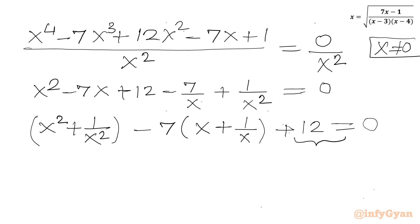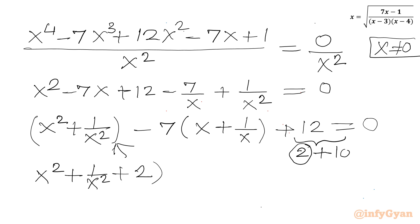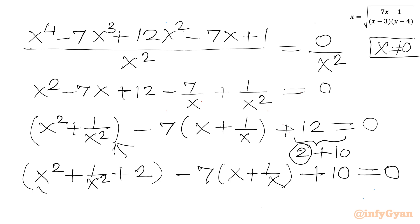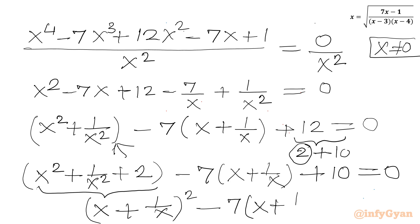Now I will split 12 as 2 plus 10, and write the 2 inside the bracket with x squared plus 1 over x squared. So the equation becomes (x squared plus 1 over x squared plus 2) minus 7(x plus 1 over x) plus 10 equals 0. This bracket is a perfect square: (x plus 1 over x) squared minus 7(x plus 1 over x) plus 10 equals 0.